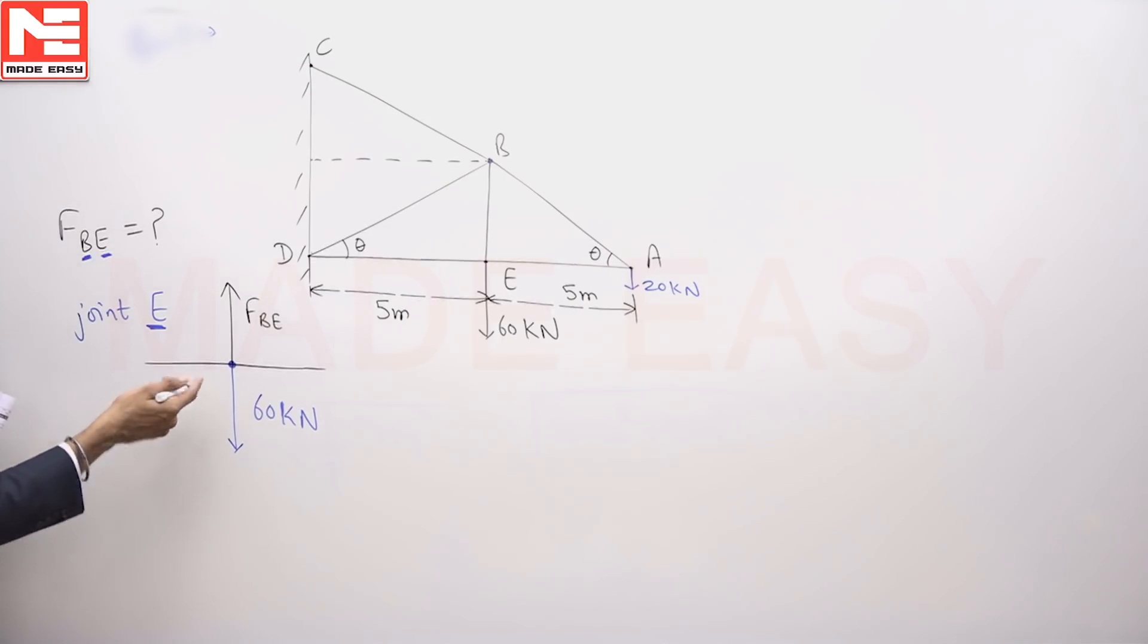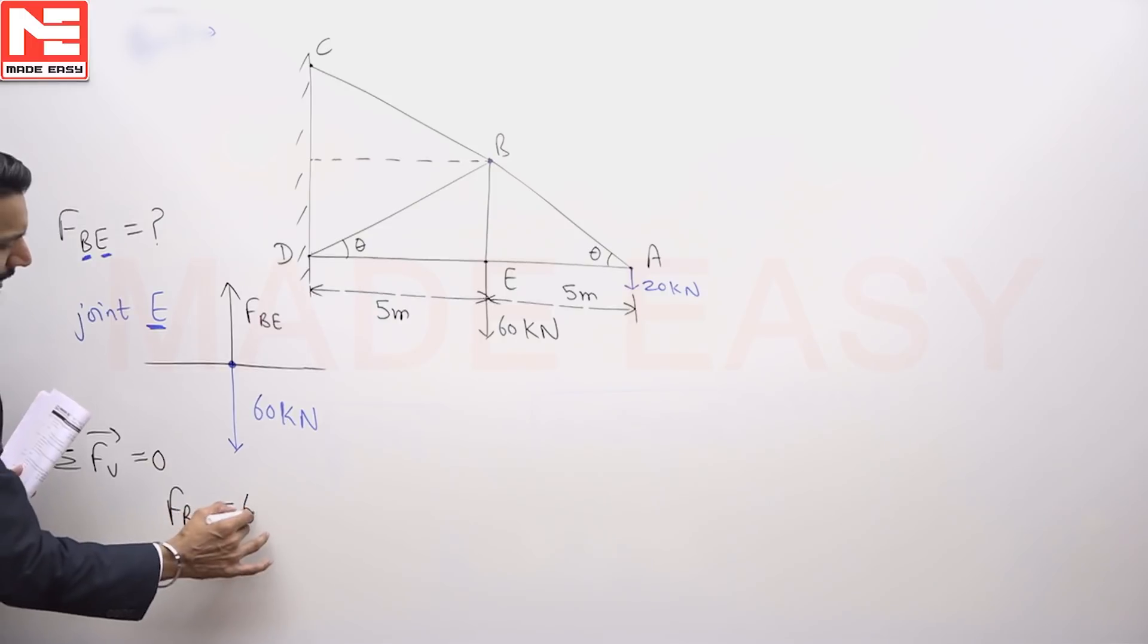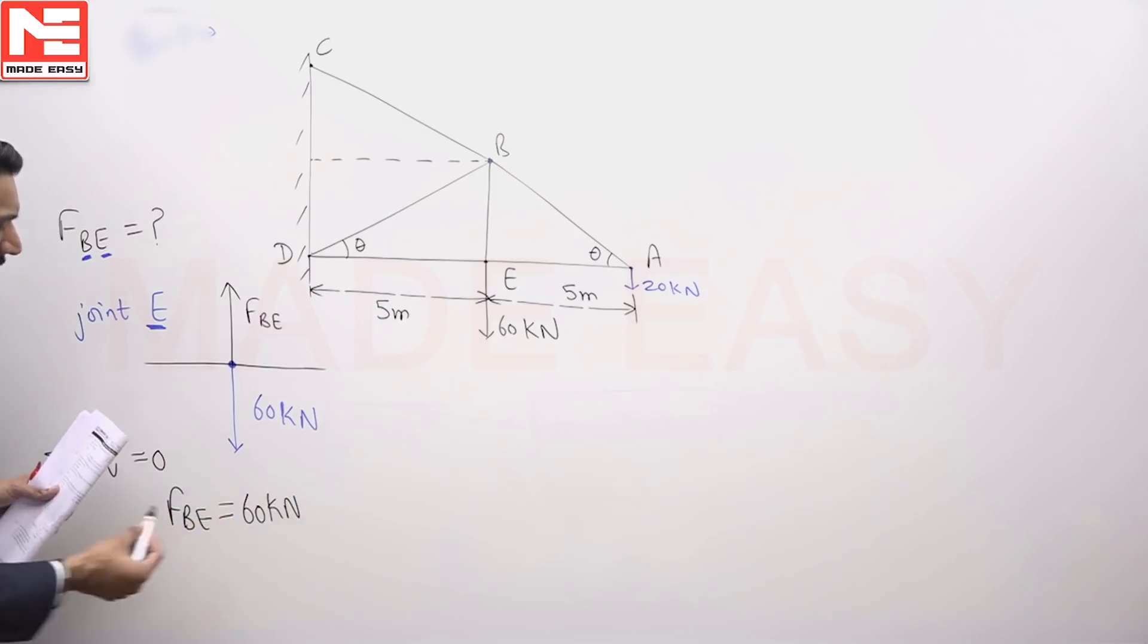I simply see if this is a truss, it will be in equilibrium. Each joint and any of the member will be in equilibrium. Considering equilibrium at a joint, the net force must be equal to 0. I am taking force in the vertical direction equal to 0. So it is coming out as FBE equals 60 kilo Newton, 60 kilo Newton.